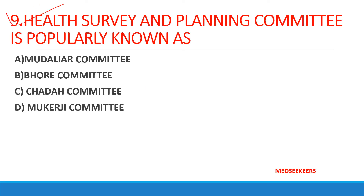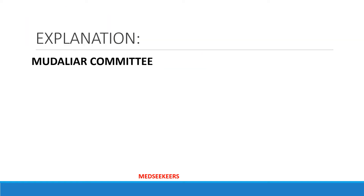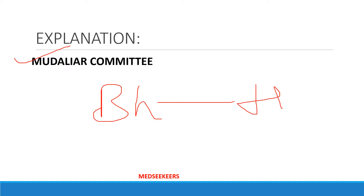This question is from history of public health: which of the following committees is also popularly known as the Health Survey and Planning Committee? Many students marked it as Bhore Committee — but your answer should be Mudliar Committee. Mudliar Committee is called health survey and planning committee; Bhore Committee is called health survey and development committee. Read the question and options carefully to avoid errors in negative marking.